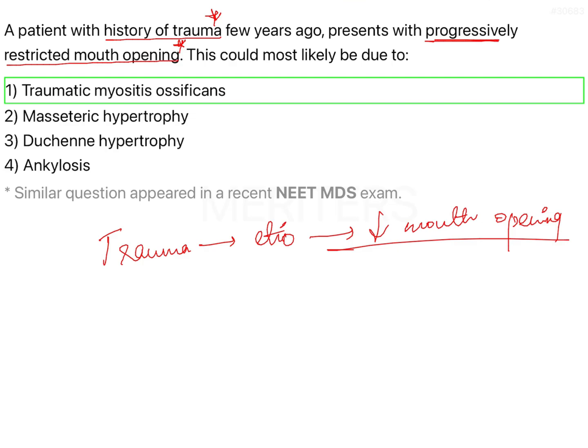Masseteric hypertrophy is the other end of the spectrum, where cells become larger due to excessive function. The most important example is bruxism, where the excessive grinding forces cause the masseter to take on all those forces. To compensate, the masseter cells become larger, eventually increasing the overall muscle size — that is called masseteric hypertrophy.